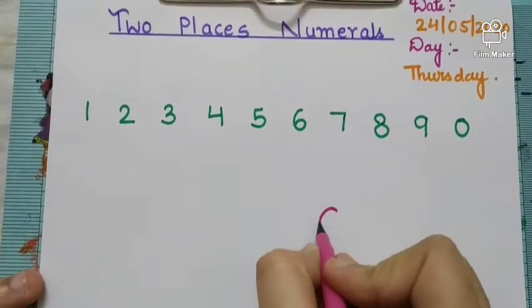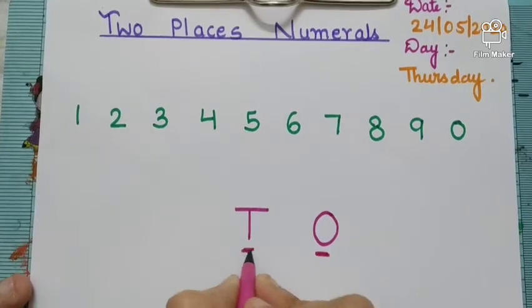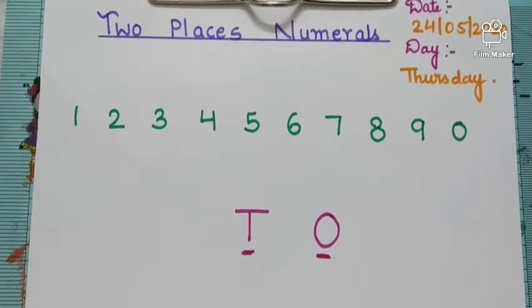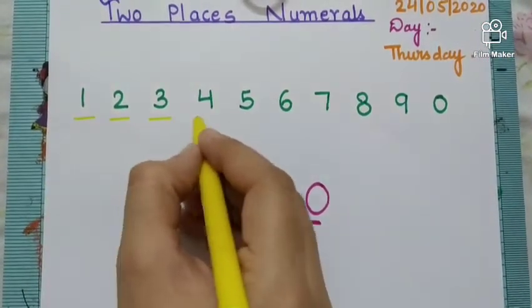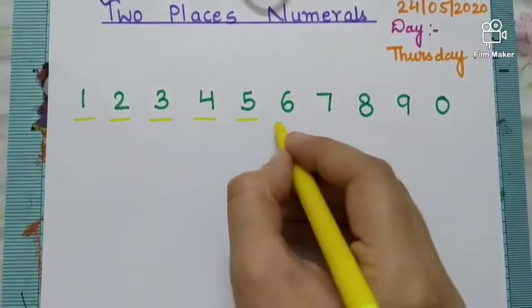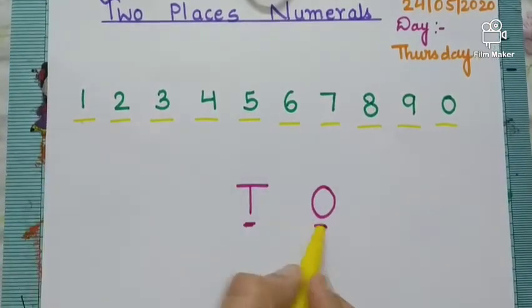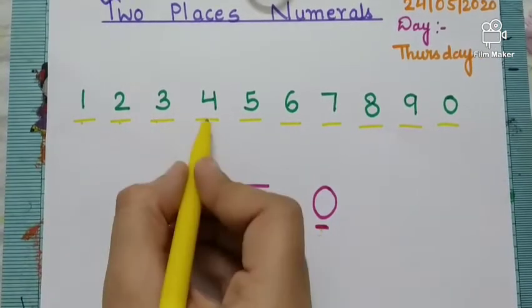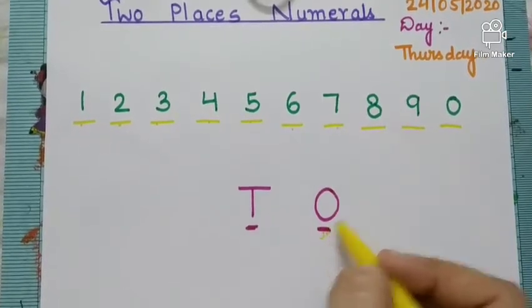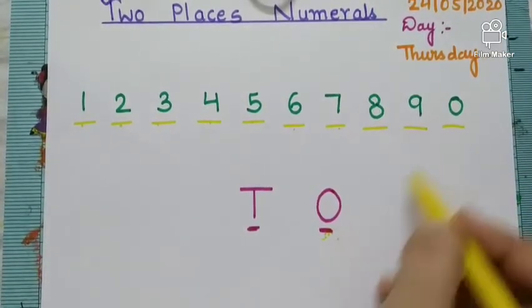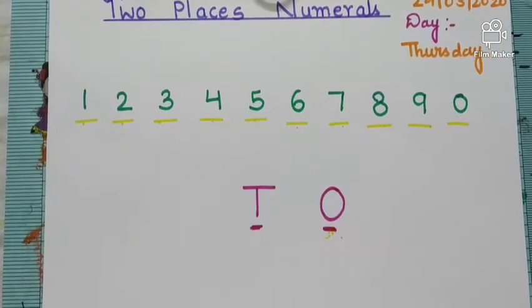See, this is place value chart. One's, ten's. This is one's place and this is ten's place. One's place mein kaunse numbers aate hain? Single digit numbers. Like 1, 2, 3, 4, 5, 6, 7, 8, 9 and 0. One once, two ones, three ones, four ones, five ones, six ones, seven ones, eight ones, nine ones and zero ones. One's place mein kaunse numbers aate hain? Just single digit numbers hote hain.